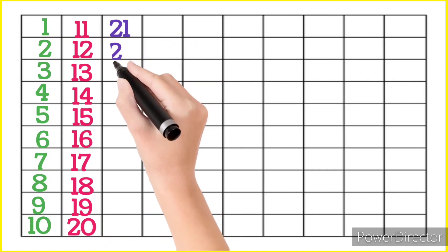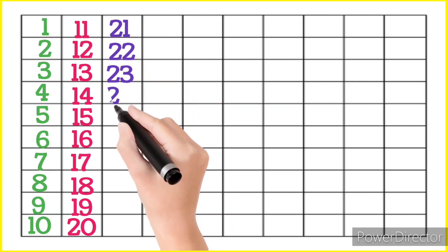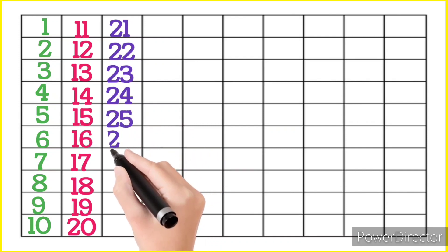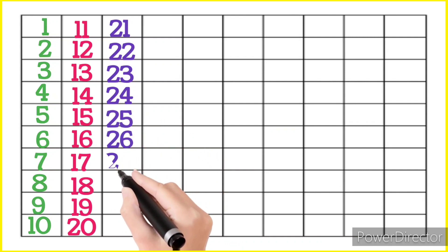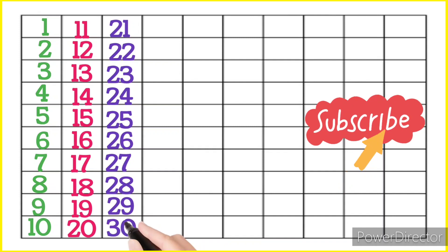2, 1, 21, 2, 2, 22, 2, 3, 23, 2, 4, 24, 2, 5, 25, 2, 6, 26, 2, 7, 27, 2, 8, 28, 2, 9, 29, 3, 0, 30